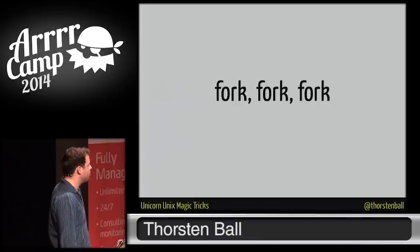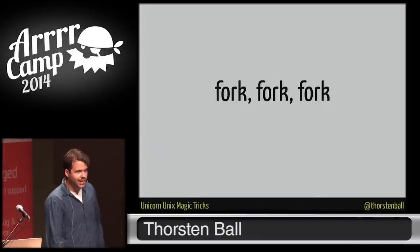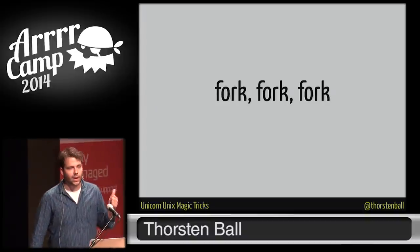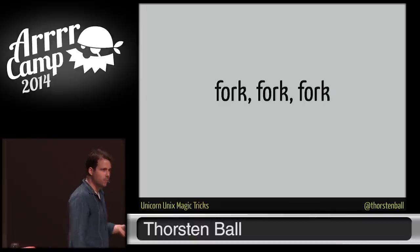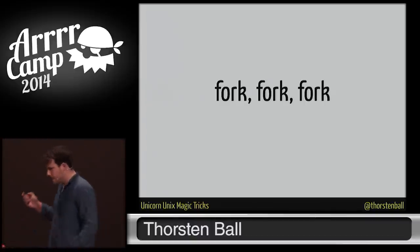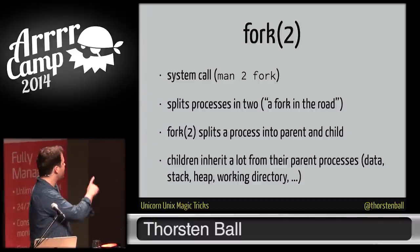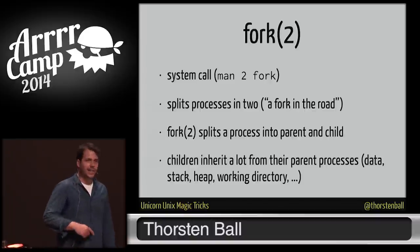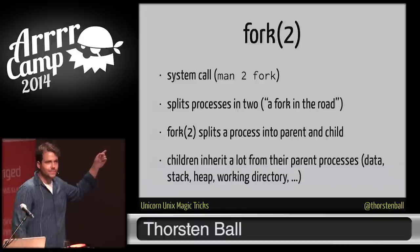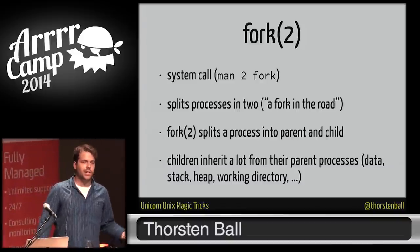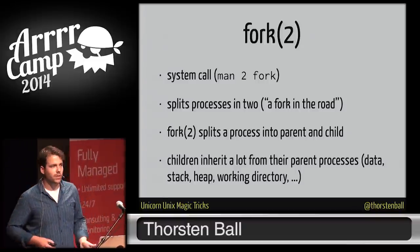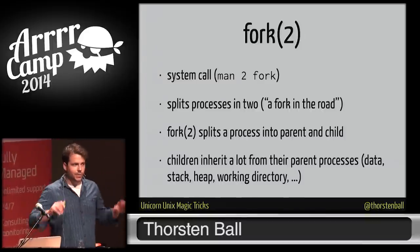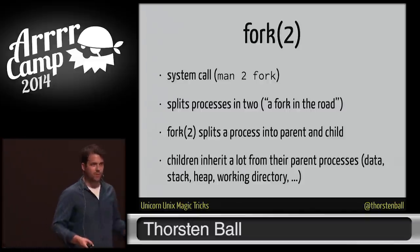So the first topic is fork. Fork in Unix is basically everything. Every process that runs on your Unix system was started by fork — well, the first one was started by your bootloader, but every process that came after was started by fork. So what is fork? Fork is a system call — the 2 behind its name means you can find the documentation in section 2 of the Unix manual. A system call means you can ask the kernel to do something for you; it's a direct connection to the kernel.